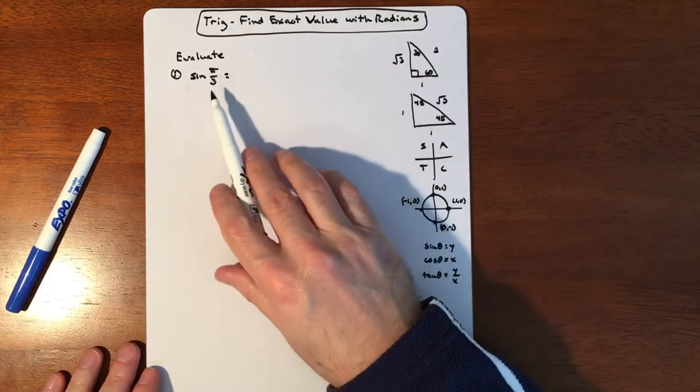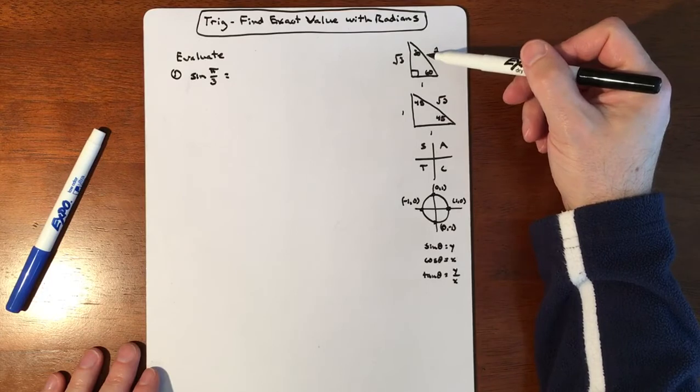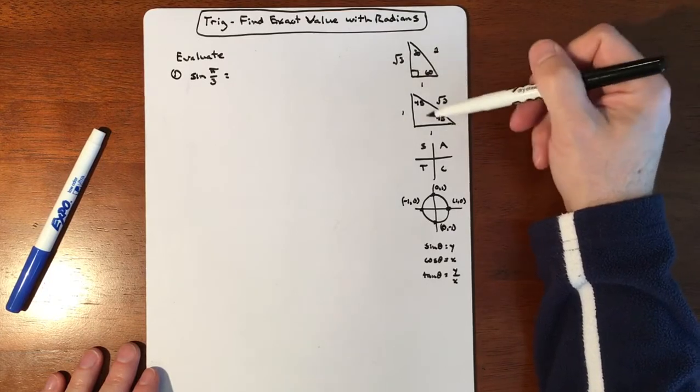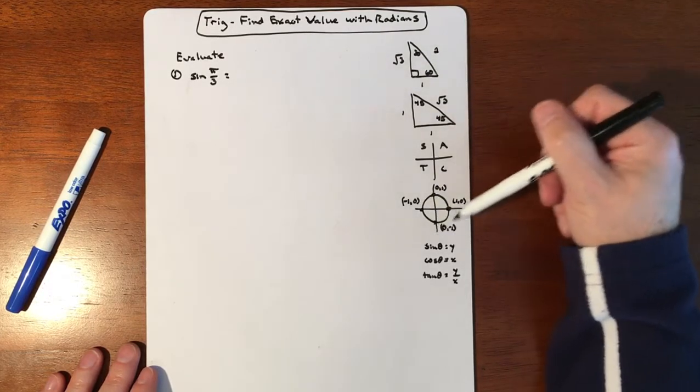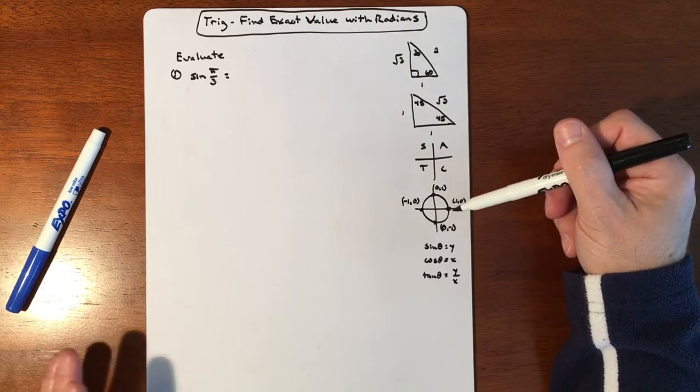So if it's going to be non-calculator you're going to be talking about angles that are coming from 30, 60, 90 triangles, 45, 45, 90 triangles, or it's going to land on an axis and that means we're just grabbing a coordinate.